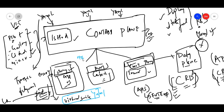For mTLS configuration and communication settings, we use destination rules. Using destination rules, we configure how traffic is routed to the destination services.